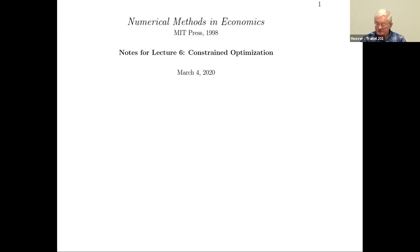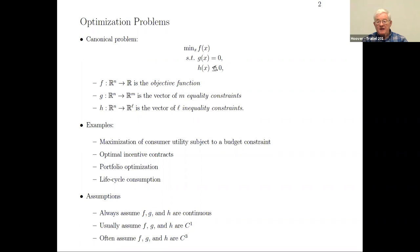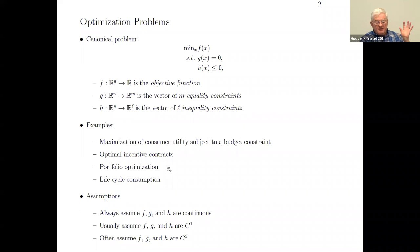Constraint optimization is the point at which we can really start talking about doing serious economics problems. Here is a canonical problem in optimization: minimize some objective function, then you have equality constraints and inequality constraints. We assume all these things have enough smoothness — C3 is certainly adequate, C2 will generally be fine. Examples include maximization of utility subject to budget constraints, optimal incentive contracts, portfolio optimization, and lifestyle consumption.